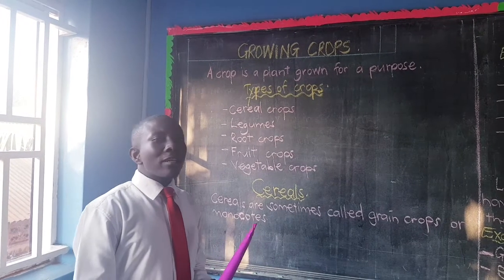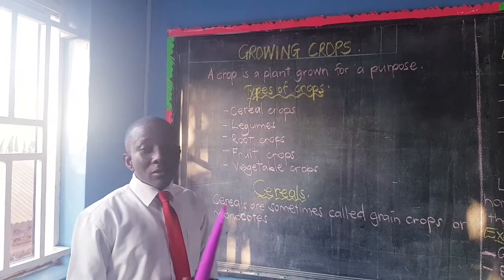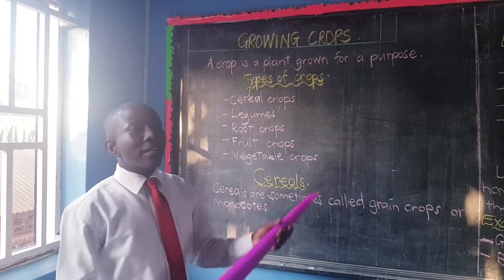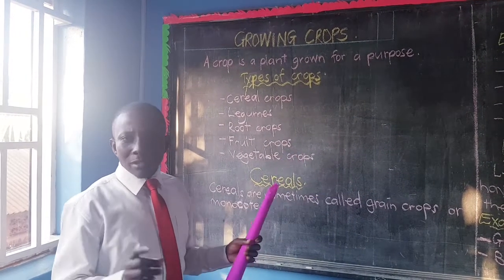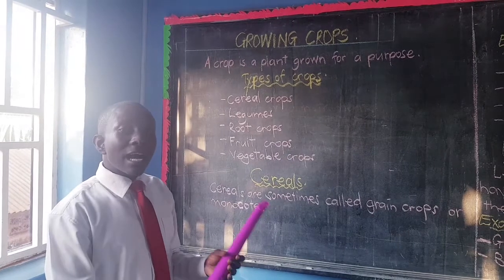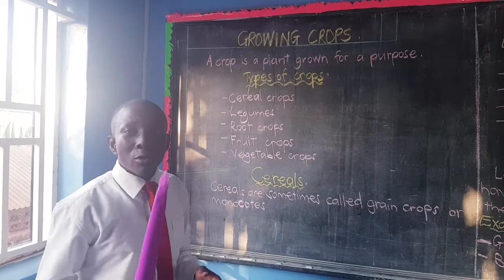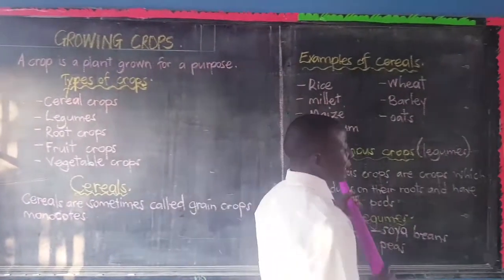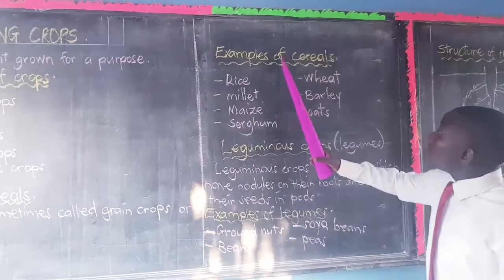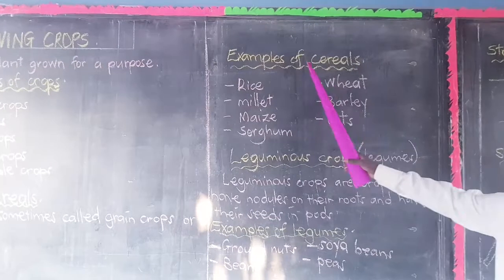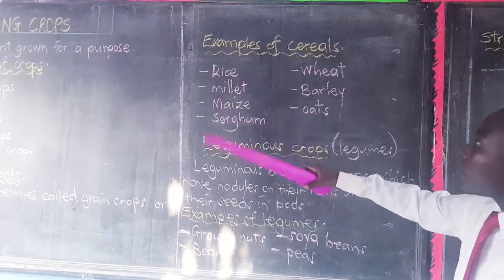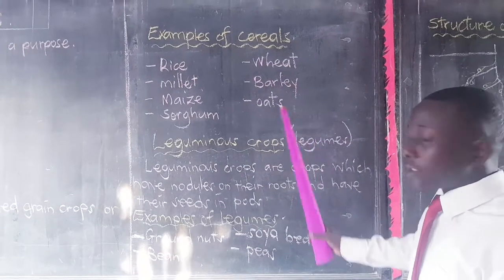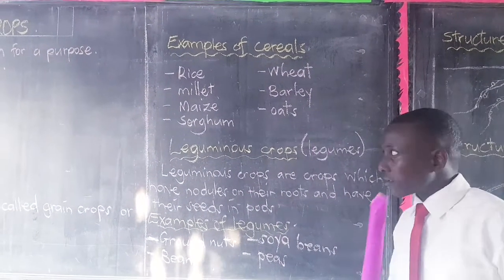Why do we call them monocots? They will ask you in the exam. Write down any two examples of monocots — write the plants, like a maize plant, like a wheat plant. Those are the monocots. They produce monocots. These are the examples of cereal crops: rice, maize, soca, wheat, barley, oats. All these are cereal crops.